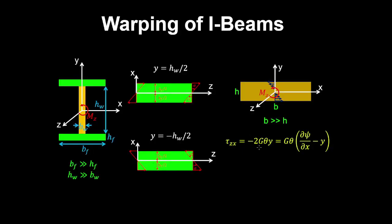We've derived the following equation for the shear stress when analysing a rectangular bar under torsion, with the assumption that the width is much larger than its height. If we equate this shear stress acting on the z-face in the horizontal direction with this expression, then we can relate the derivative of the warping function to the shear stress. Cancelling out the shear modulus and the rate of twist, and adding y to both sides, we get the partial derivative of the warping function with respect to x is minus y.